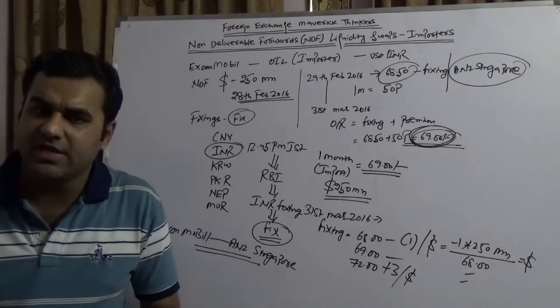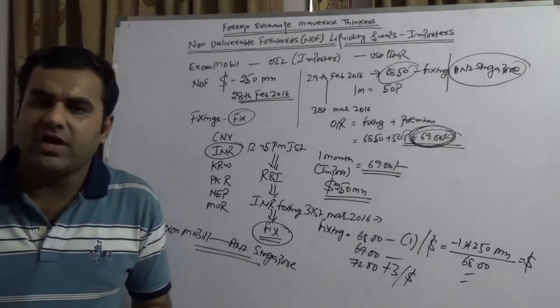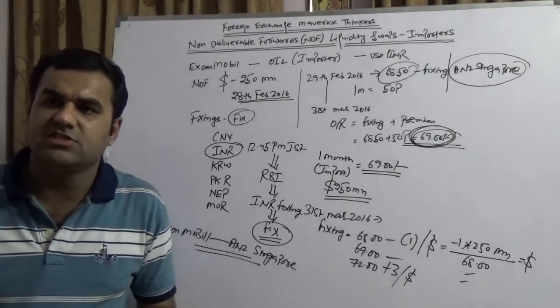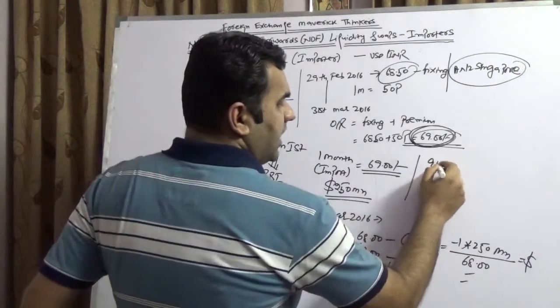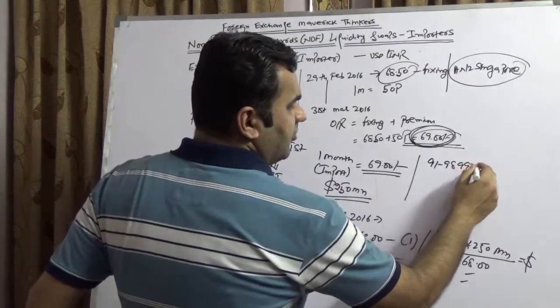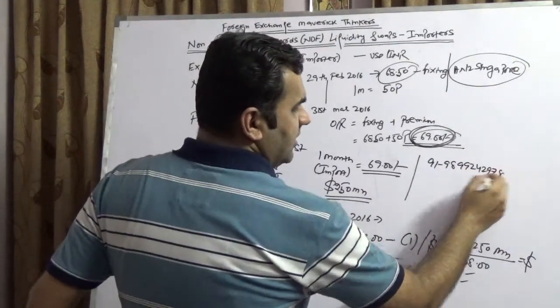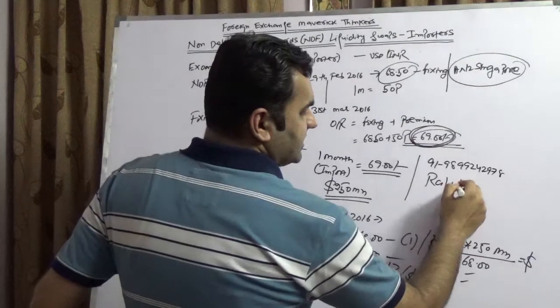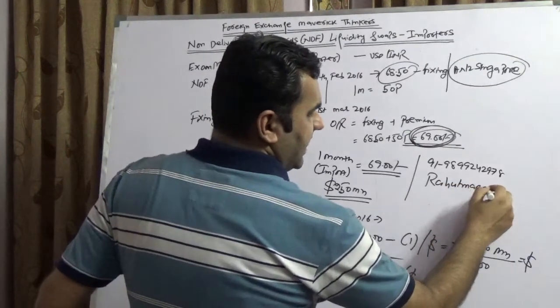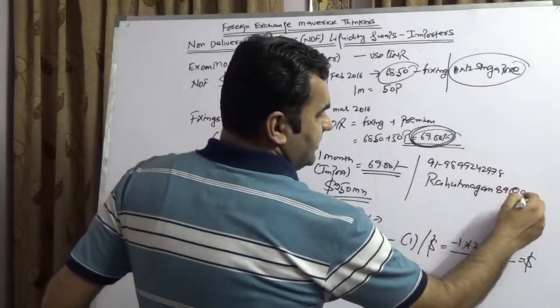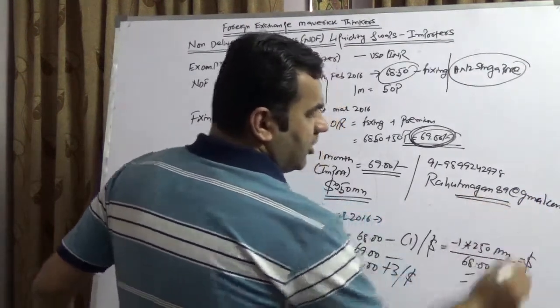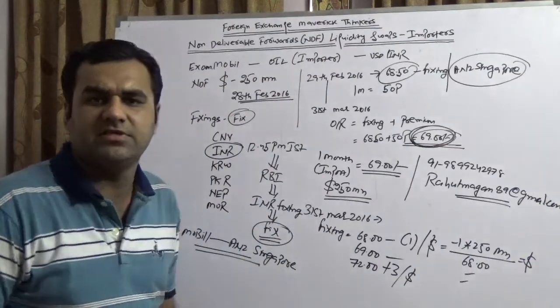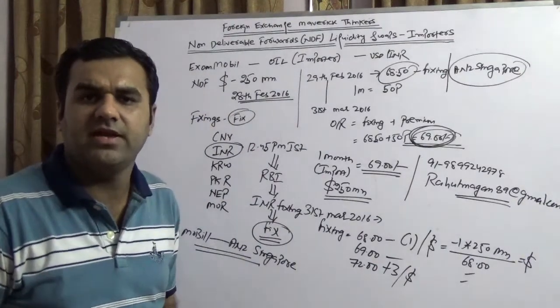At the end, I want to thank you and I hope you had a look at our latest Treasury magazine, which is the Maverick Treasurer. You're most welcome to call me at 9198-99242-978. You are welcome to write to us at rahulmagan89 at the rate gmail.com to get a copy of your Treasury magazine. Thank you very much and have a good luck.